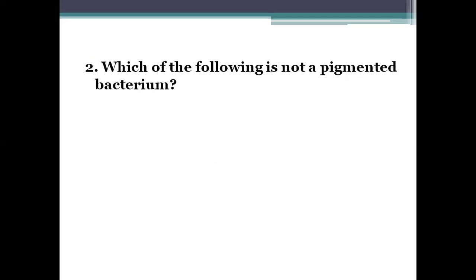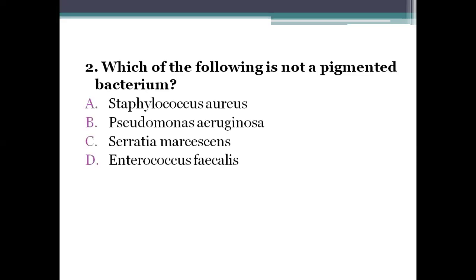Next question: which of the following is not a pigmented bacteria? Option A, Staphylococcus aureus. Option B, Pseudomonas aeruginosa. Option C, Serratia marcescens. Option D, Enterococcus faecalis. The right answer is option D, Enterococcus faecalis — it is a non-pigmented bacterium and does not produce any pigments.